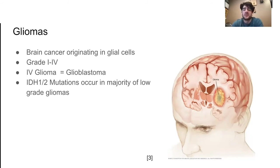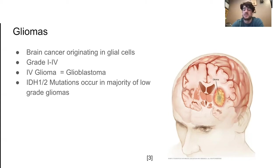The next speaker will discuss how aggressively gliomas develop based on their malignancy. Grade one glioma is the least aggressive, and grade four glioma, also known as a glioblastoma, is very aggressive. Notably, the previously mentioned IDH1 and IDH2 mutations occur in the vast majority of low-grade gliomas and less frequently in higher-grade gliomas like glioblastomas.